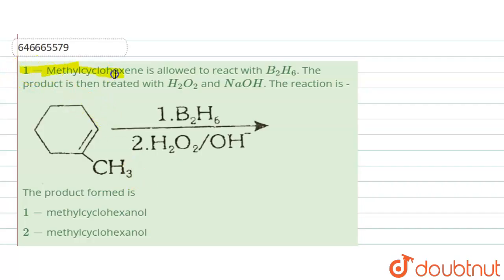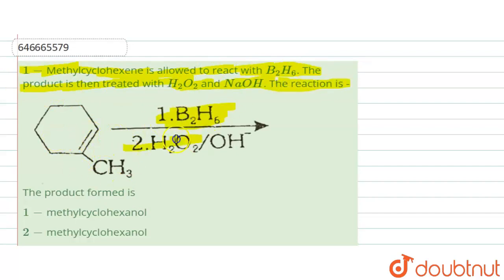The question is: 1-methylcyclohexene is allowed to react with B₂H₆, and the product is then treated with H₂O₂ and NaOH. So the reactant is given, and the two-step reagents are B₂H₆ in the first step, then H₂O₂ / OH⁻ in the second step.